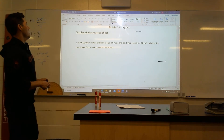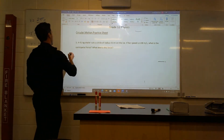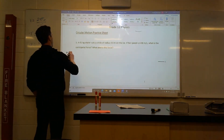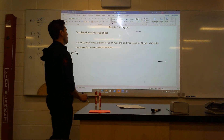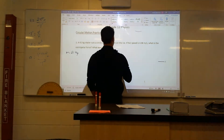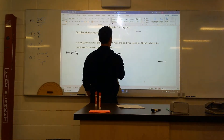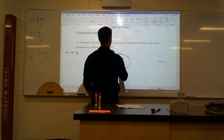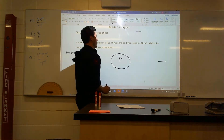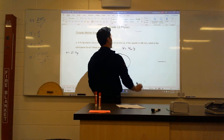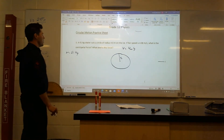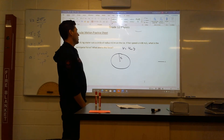So it says a 61 kilogram skater — mass equals 61 kilograms — cuts a circle of a radius of four meters in the ice. Basically, this person is going around in a circle. They're skating on ice and there is a radius of four meters. Her speed is four meters per second. What is the centripetal force? What exerts this force?